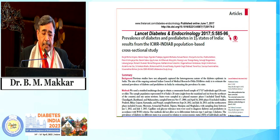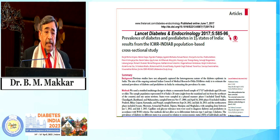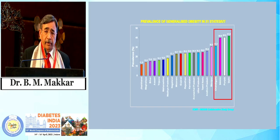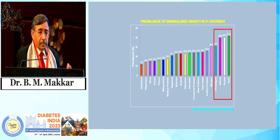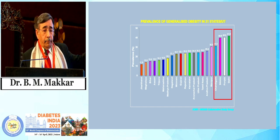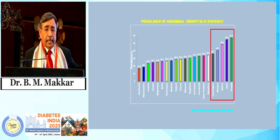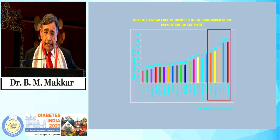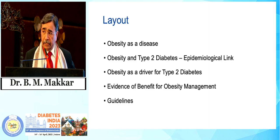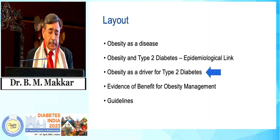Obesity is a key driver for developing type 2 diabetes, and we now have data from India also. The ICMR study looked at the prevalence of diabetes across all states in India. It showed that states with high prevalence of obesity — Chandigarh, Sikkim, Punjab and Delhi — also had high prevalence of abdominal obesity and the highest prevalence of diabetes. So there is a strong correlation between the two conditions.